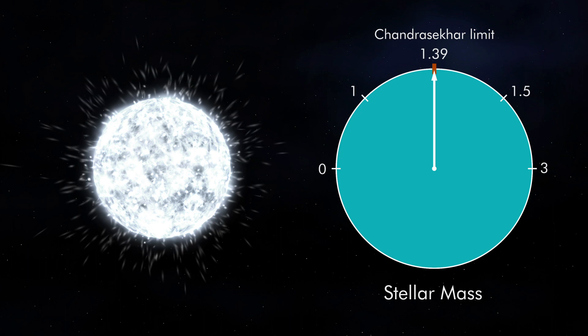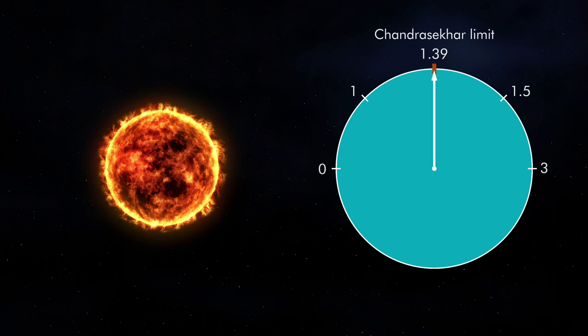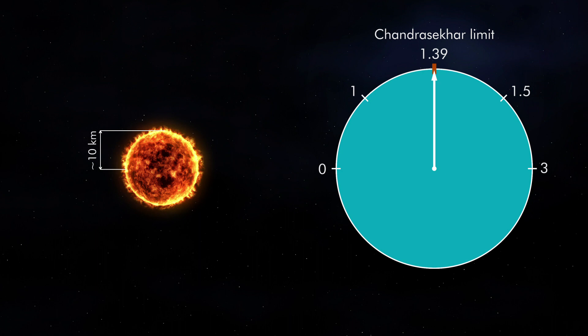The dead star is now a neutron star. It shrinks down to a sphere with a radius of about 10 kilometers, and the spinning can be as fast as hundreds of times per second.